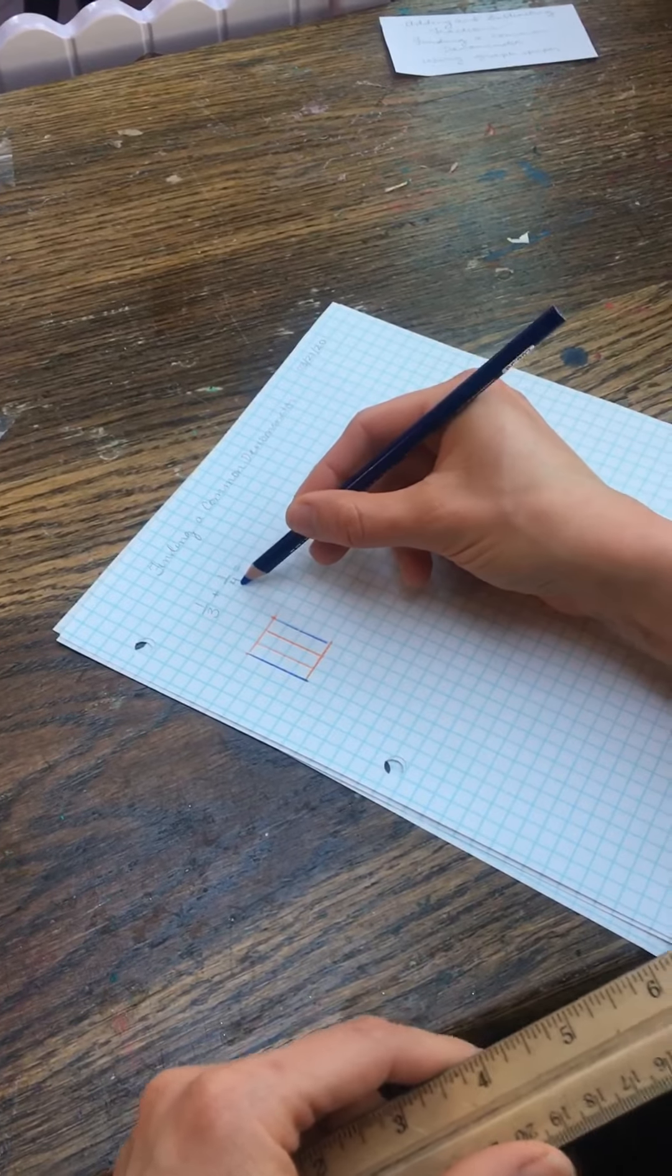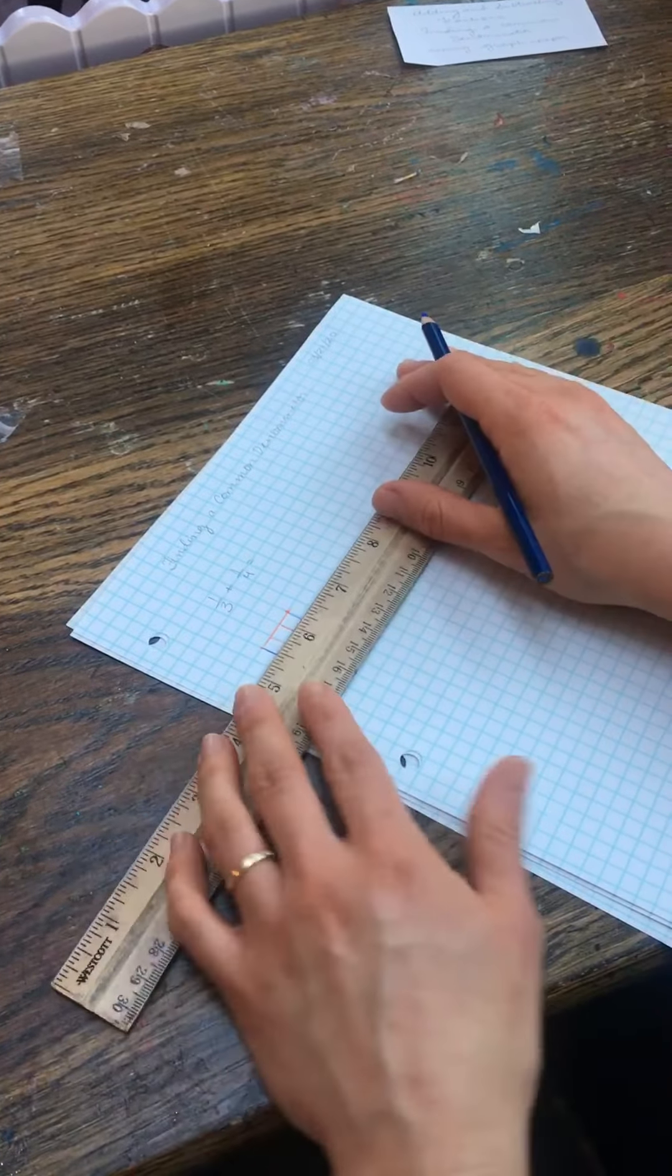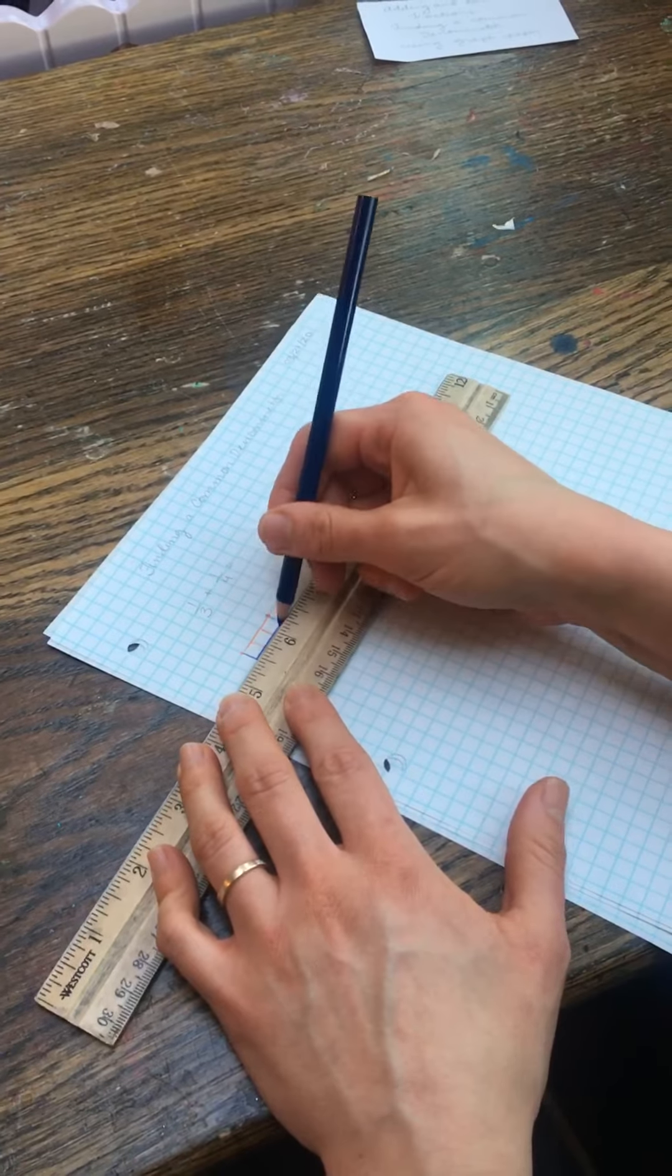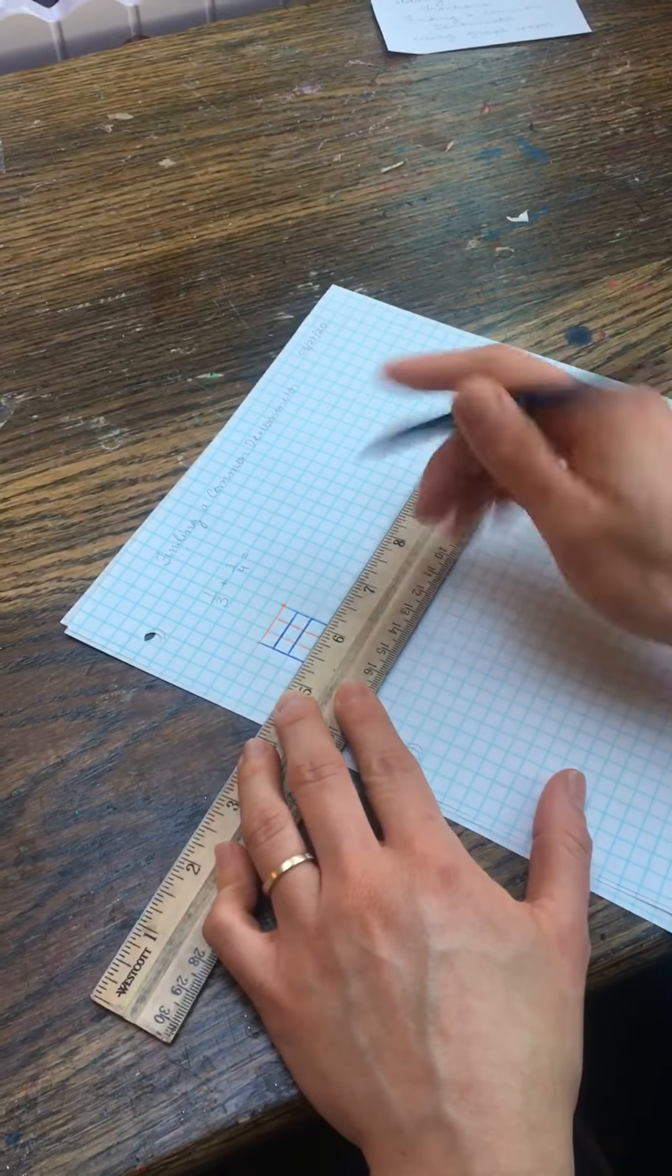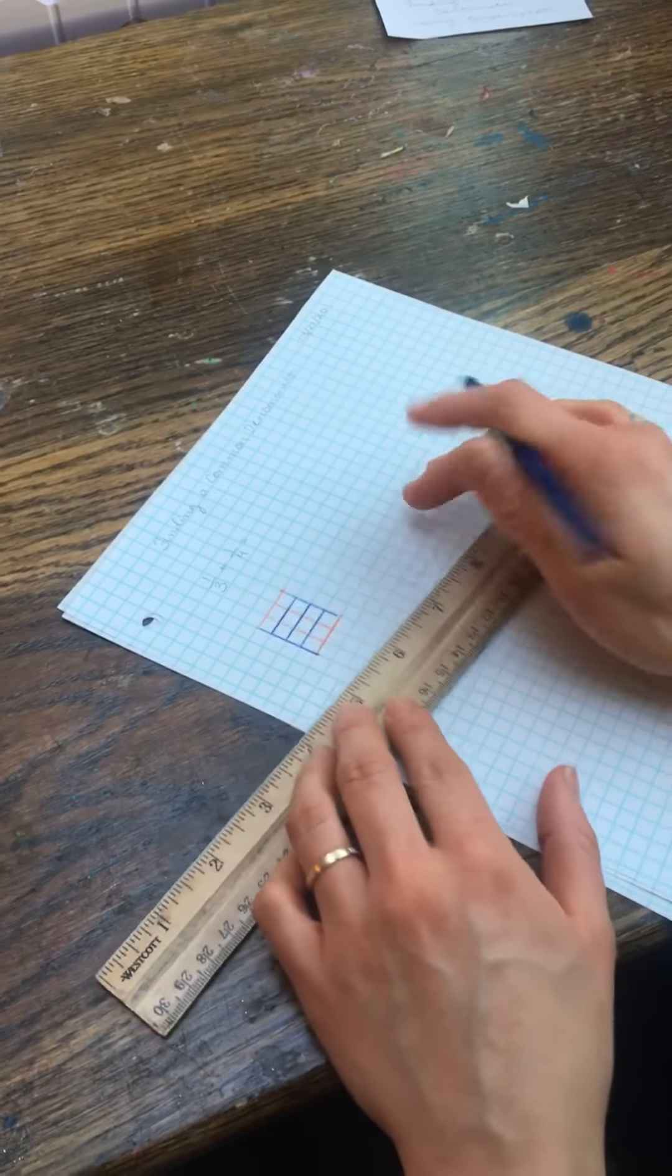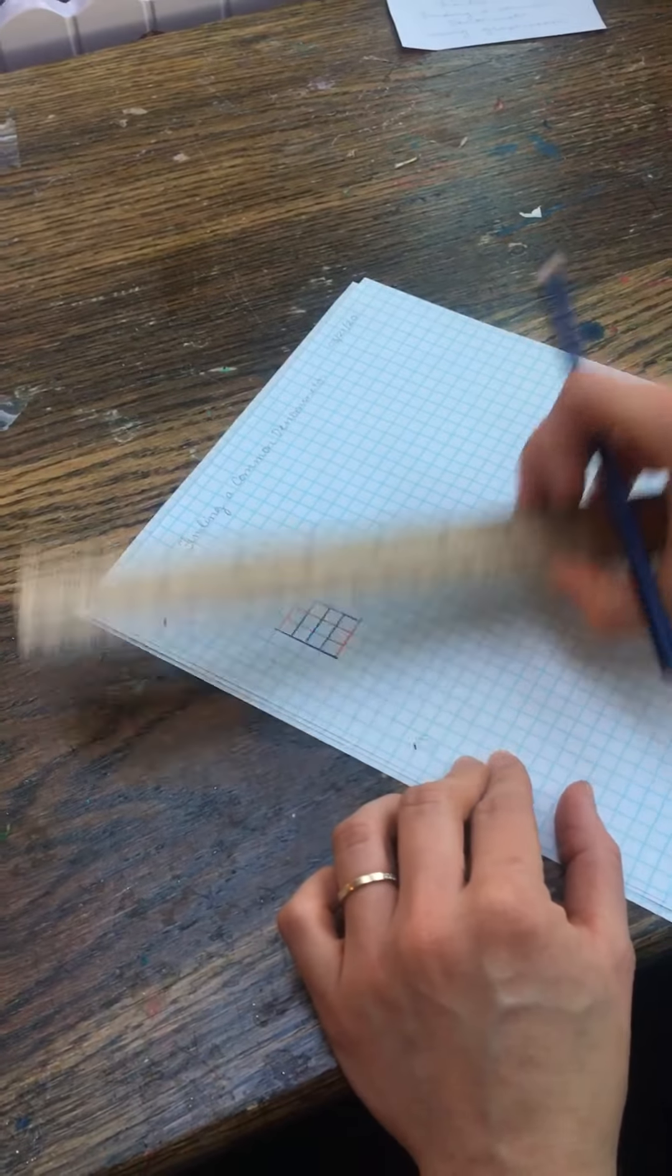Now I want to see the same rectangle split into fourths. So there's one fourth, there's two fourths, there's three fourths, and four fourths.